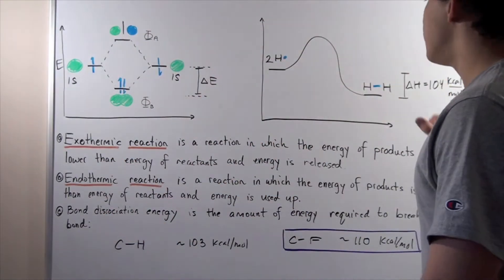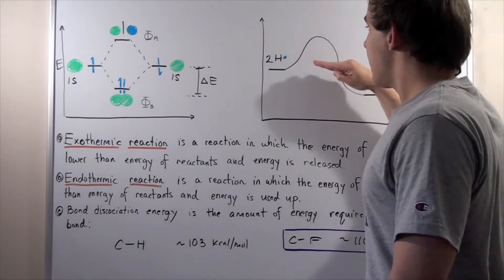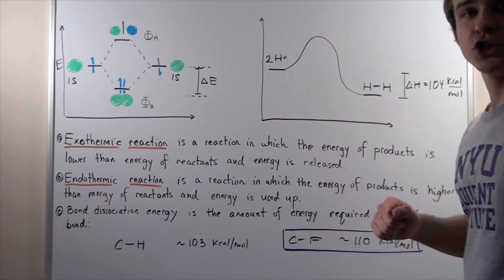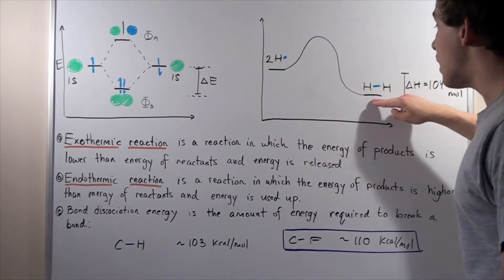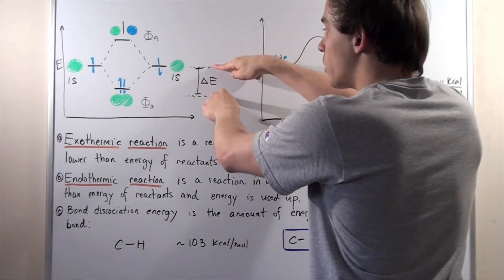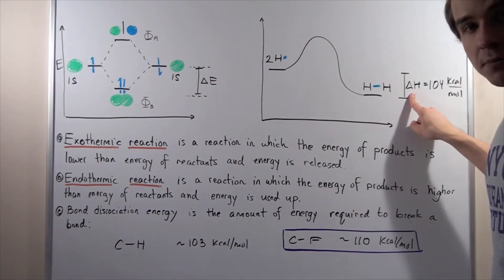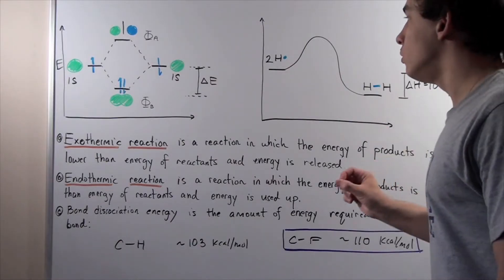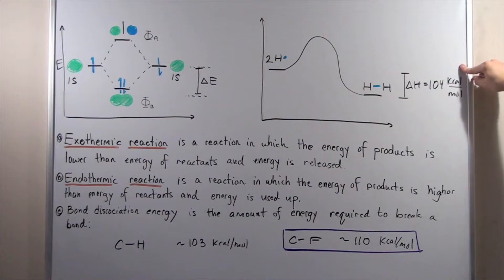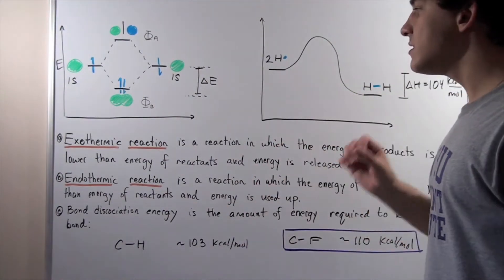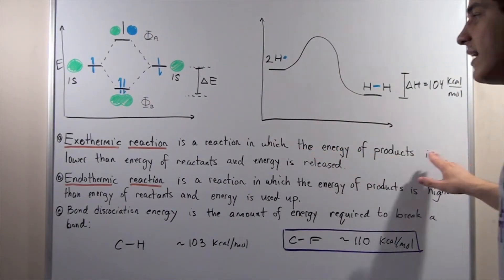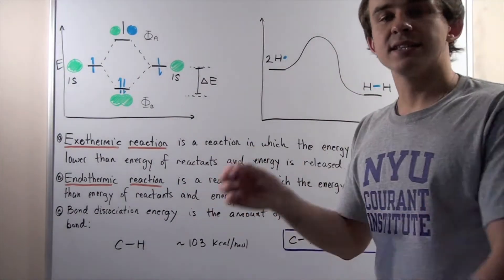Looking at this in a more simplified fashion: here we have two H atoms at some energy level. They react, surmount the activation barrier, and form our diatomic H₂ molecule, which is lower in energy than the initial reactants. Our products are lower than our reactants, and this change in energy is the change in enthalpy, ΔH. For one mole of H reacting with another mole of H to form one mole of H₂, 104 kilocalories of energy will be released into the environment. This is known as an exothermic reaction — a reaction in which the energy of products is lower than the energy of reactants and energy is released into the environment.